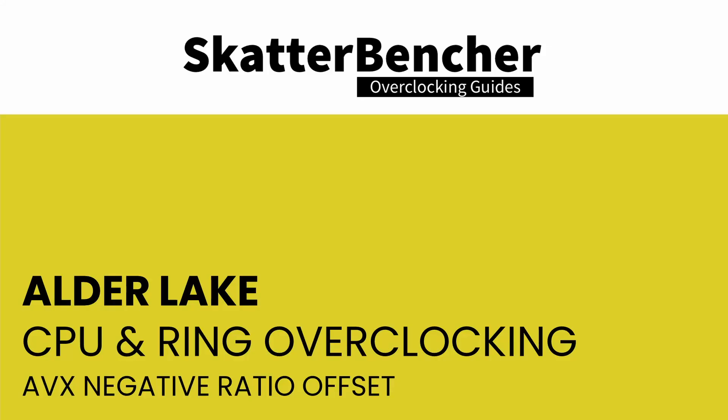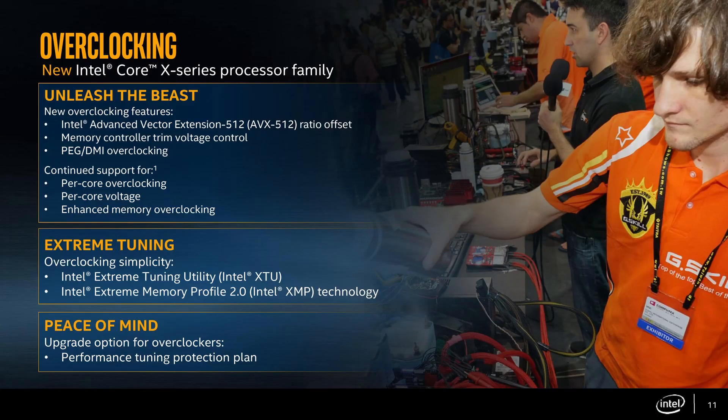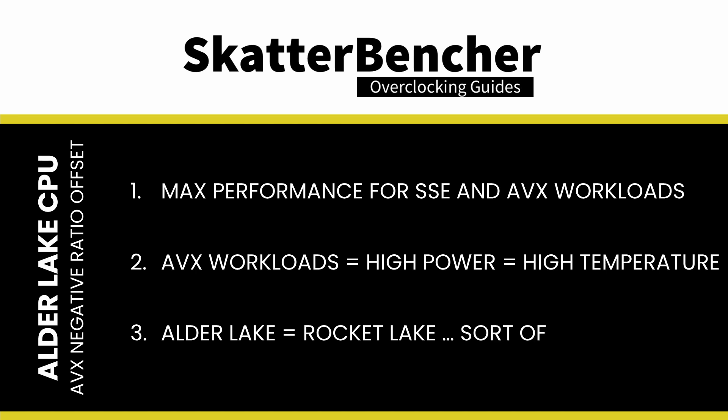Intel first introduced the AVX negative ratio offset on Broadwell E processors. Successive processor generations adopted this feature and eventually expanded it with AVX512 negative offsets. AVX negative offsets are very useful to achieve maximum performance for both SSE and AVX workloads. While the function carried over in principle, there are some big differences in the implementation of the AVX ratio offset between Alder Lake and Rocket Lake.